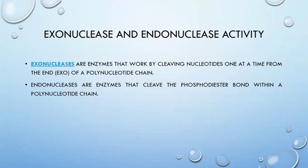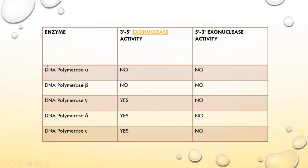Exonuclease activity की बात करें तो DNA polymerase alpha के पास कोई भी exonuclease activity नहीं है — ना 3' से 5', ना 5' से 3'। DNA polymerase beta के पास भी कोई exonuclease activity नहीं है। लेकिन DNA polymerase gamma, delta, और epsilon के पास 3' से 5' exonuclease activity होती है। किसी के पास भी 5' से 3' exonuclease activity मौजूद नहीं है।